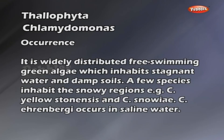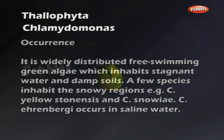Chlamydomonas is a widely distributed free-swimming green algae which inhabits stagnant water and damp soils. A few species inhabit snowy regions, for example C. yellowstonensis and C. nivalis. C. Ehrenbergii occurs in saline water.